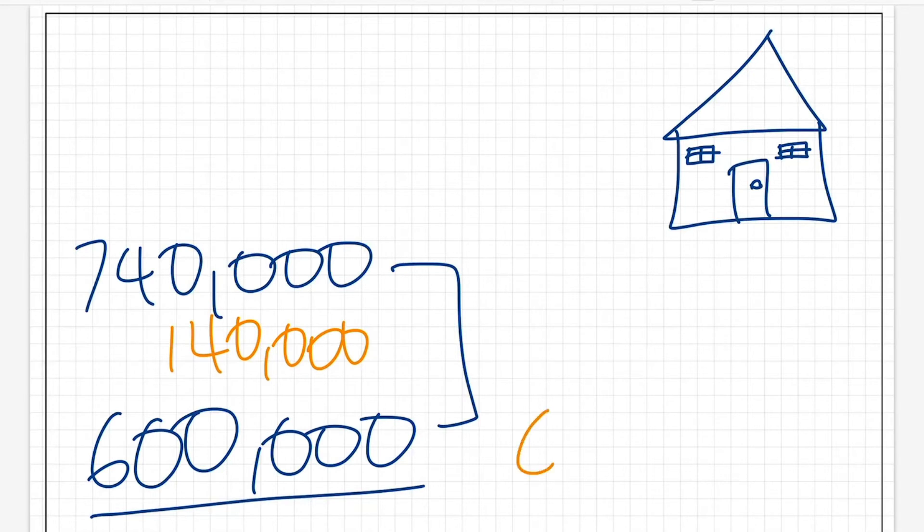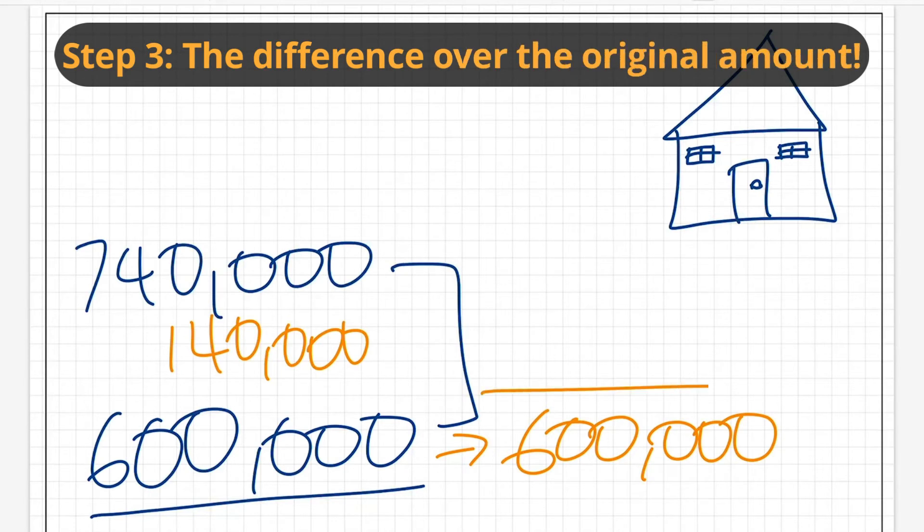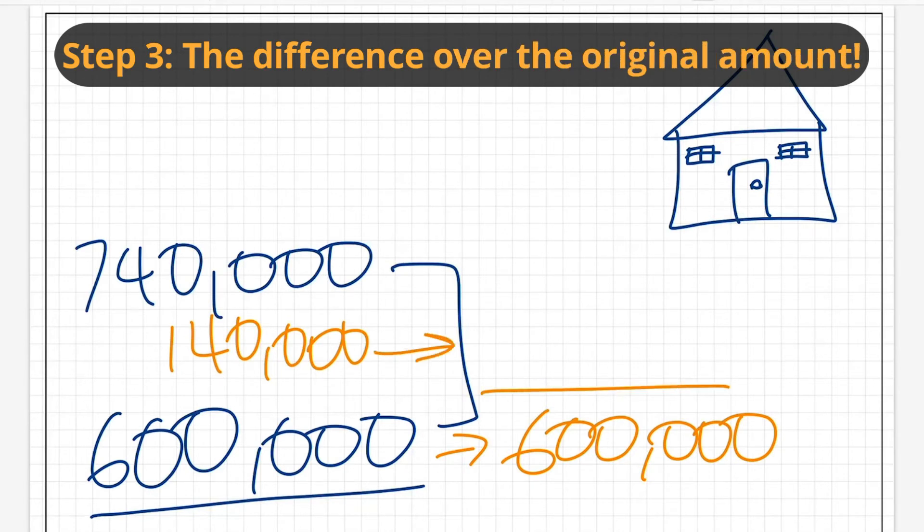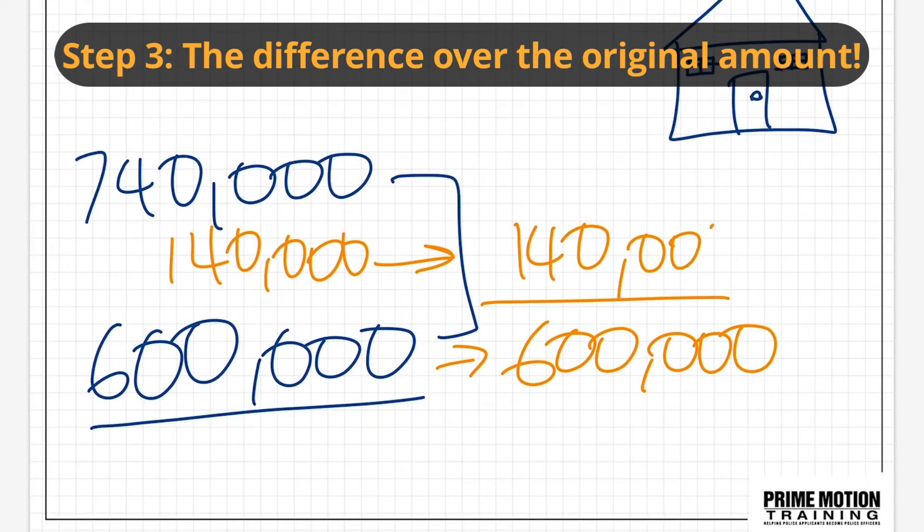Now, the original amount, it's very important to keep that in mind, was $600,000. What we do is we place the difference over the original amount. If you just remember that one phrase, you'll be able to answer these questions: the difference over the original amount.